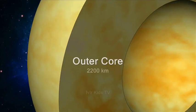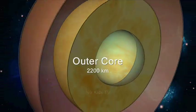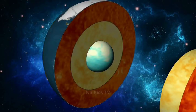Outer core: The outer core has a thickness of about 2,200 kilometers and consists mainly of iron.